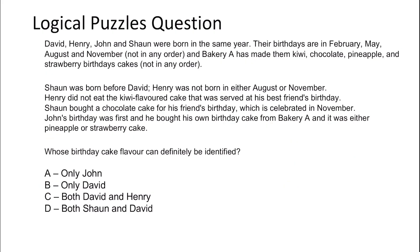Let's go to a harder version — question three, the hardest of the lot. The clues are: Sean was born before David. Henry was not born in August or November. Henry didn't eat the kiwi flavored cake served at his best friend's birthday. Sean bought a chocolate cake for his friend's birthday, which is celebrated in November. John's birthday was first and he bought his own birthday cake from Breakaway, and it was either pineapple or strawberry. I'll put the names down the middle — David, Henry, John, Sean — with birthdays (Feb, May, August, November) and cake flavors (kiwi, chocolate, pineapple, strawberry) on either side.